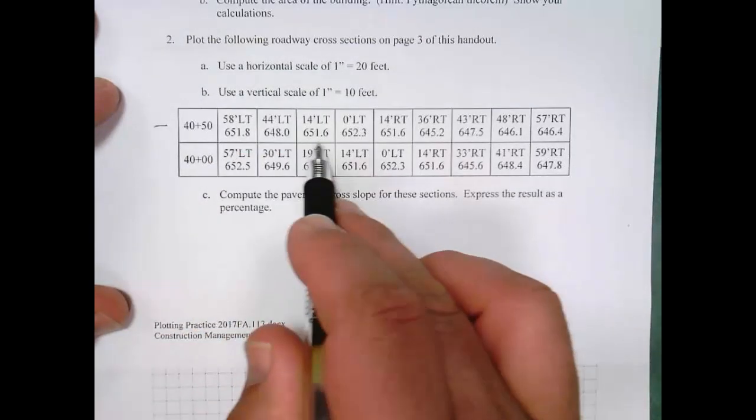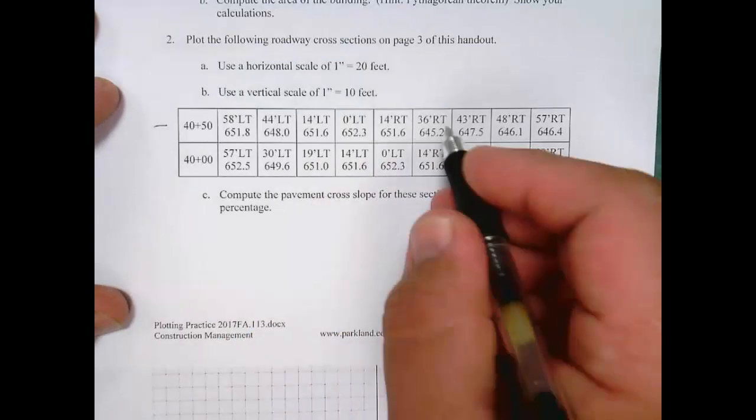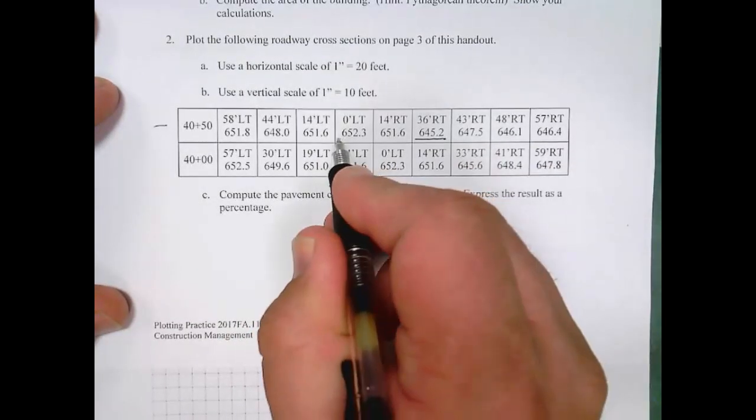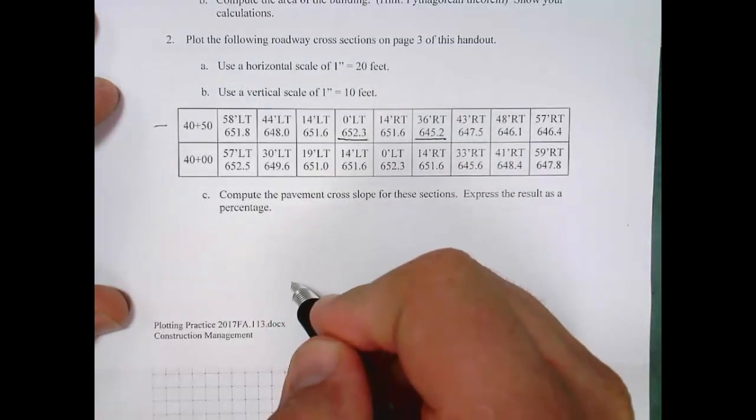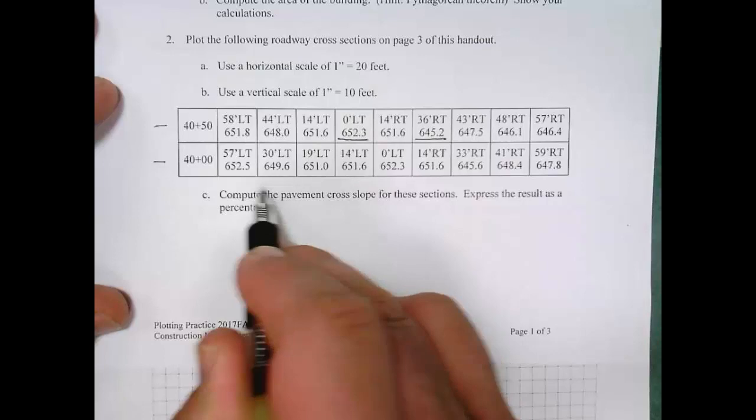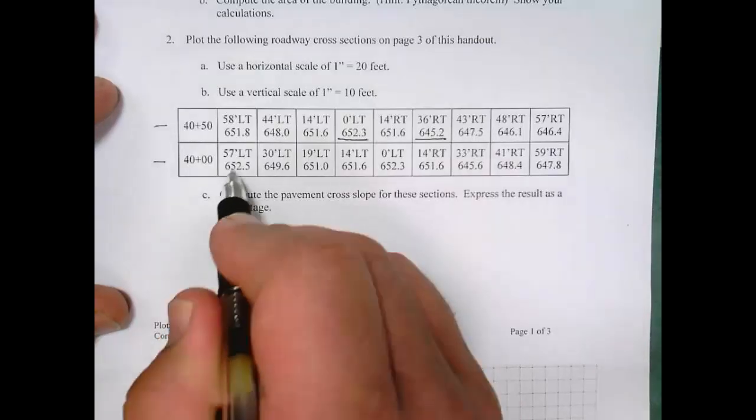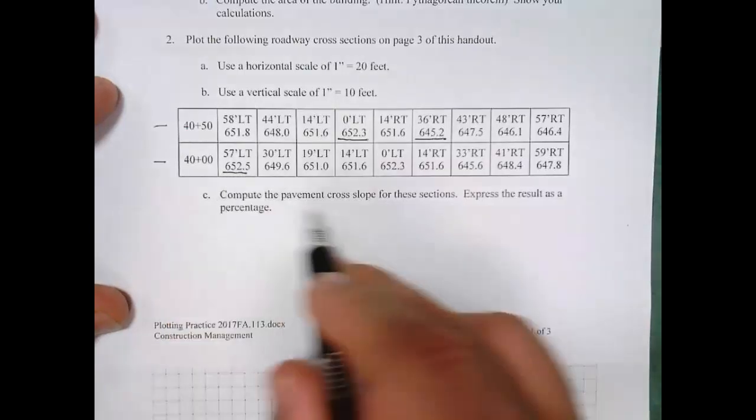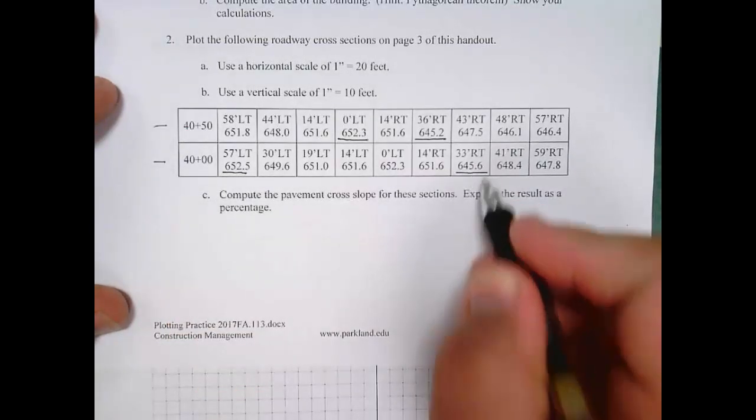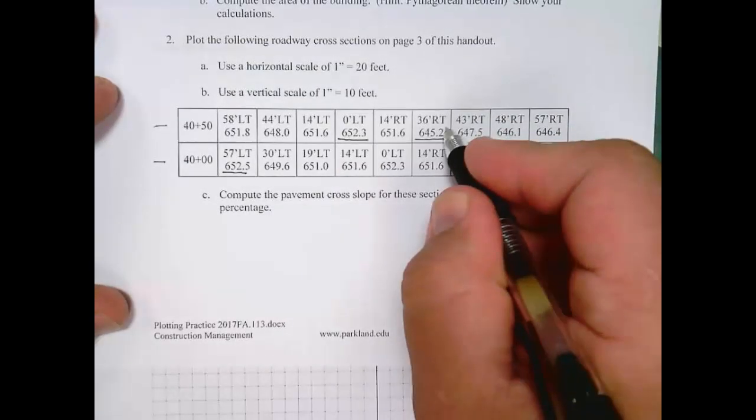So let's first look for the high and low elevations within each section. This appears to be the lowest elevation, and that's the highest elevation in that cross-section. Now let's go ahead and get the other one. It's looking like this one is the highest elevation, and the lowest elevation is right there. Let's just go ahead and label those so we know what those are.